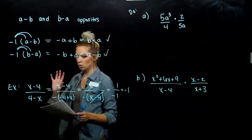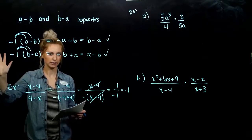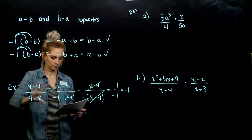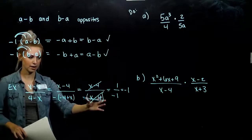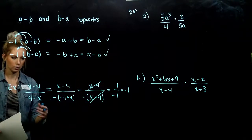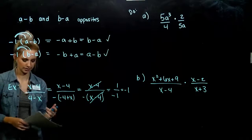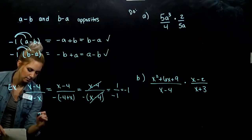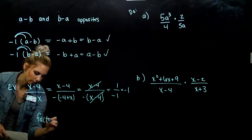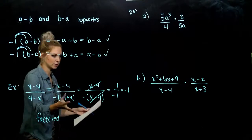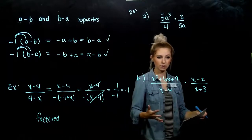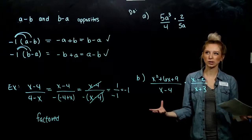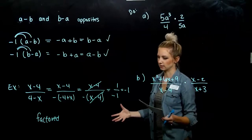After we multiply expressions together, we need to leave them in factored form, because then we can recognize if we have opposites to cancel out or if there are still more factors in common. We should leave the numerator and the denominator in factored form. You might be tempted to multiply what's left together at the end, but it's better practice to leave it in factored form so we can look more closely and see if there's anything still in common.